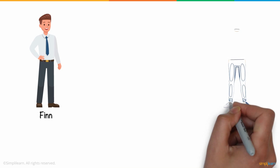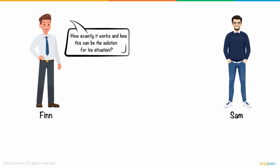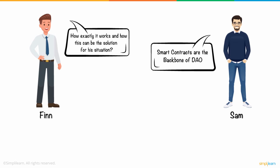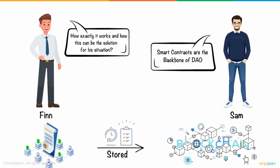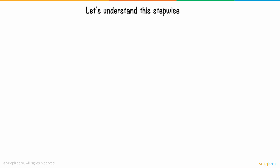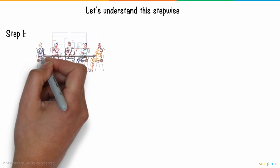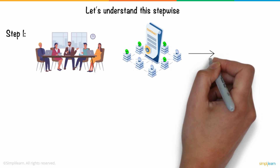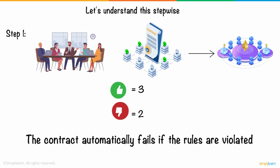Finn was fascinated and asked Sam how exactly it works and how this can be the solution for his situation. Sam explained that smart contracts are the backbone of DAO. Smart contracts are programs that run when certain conditions are met and are stored on a blockchain. In Step 1, the documentation of the idea takes place. A group of people write smart contracts to administer the organization. Once the contract goes live on the Ethereum network, changes to its rules can be proposed only by voting, and the contract automatically fails if the rules are violated.